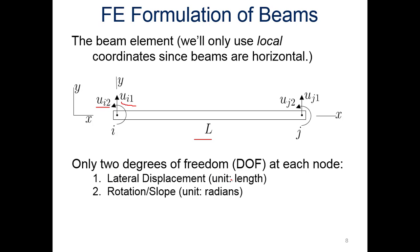Only two degrees of freedom that we have here. We've got lateral displacement, and the units there are length, and the rotation or slope at each node. So we also have it here at node J, and there's the lateral displacement. The rotation or slope is going to be in radians. So we've got length here and radians here, two different units. We'll talk about later how we have to work with that.